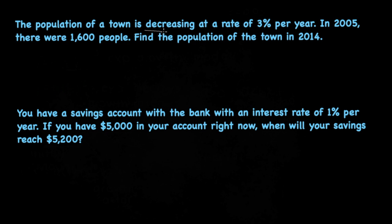So let's first take a note of what's going on in the problem. The population of the town is decreasing. We're given a rate of 3 percent. We're given our initial value. Initially, in 2005 there are 1,600 people.